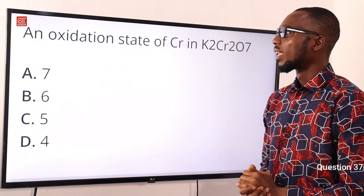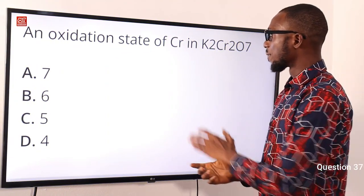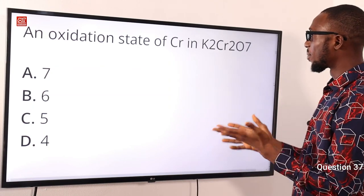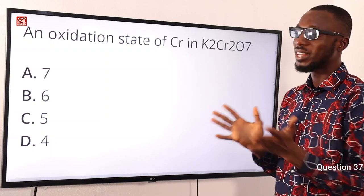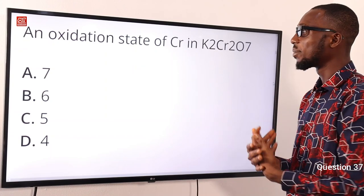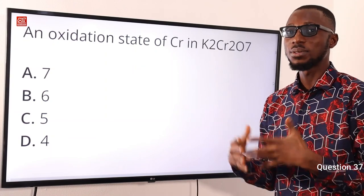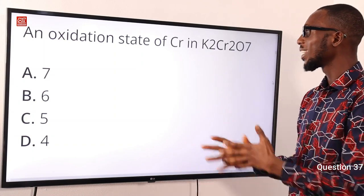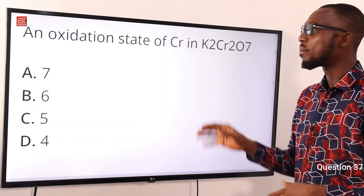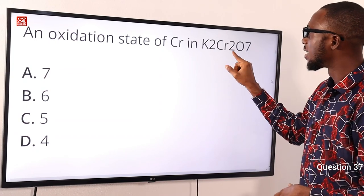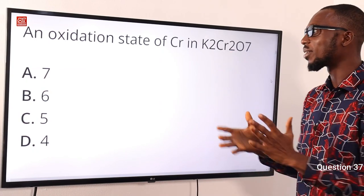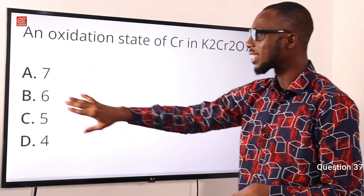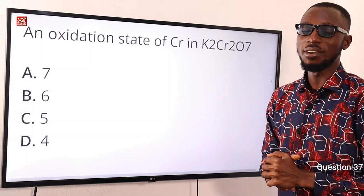Question 37: The oxidation state of chromium in potassium heptadichromate(VI) — commonly called potassium dichromate — is what? The oxidation state of chromium in this compound is 6. Option B is correct.